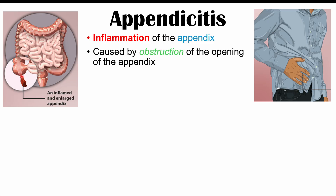How do individuals get appendicitis? It's going to be caused by obstruction of the opening of the appendix — that little structure that juts off the first part of the large intestine. There is a lumen, a little connection between the two. What happens is there's going to be an obstruction or a blockage that ends up leading to an inflamed and swollen appendix.